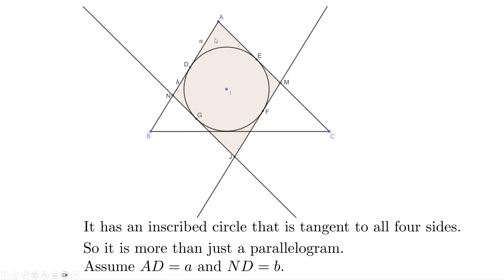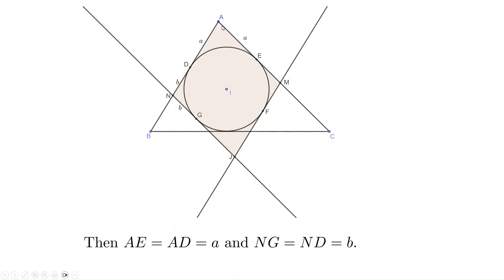We further assume the side lengths AD equals a and DN equals b. Then AE and AD have the same length, which is a. Also NG equals ND, which is b.